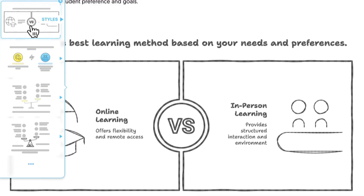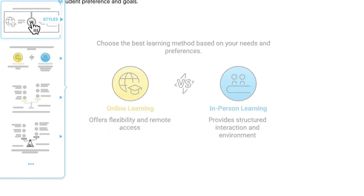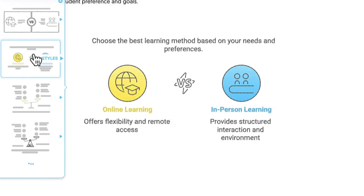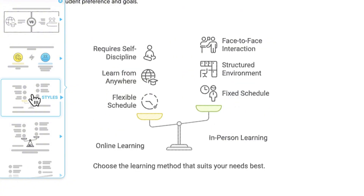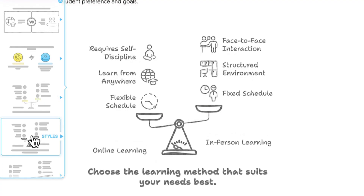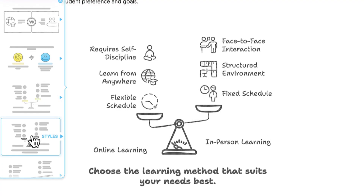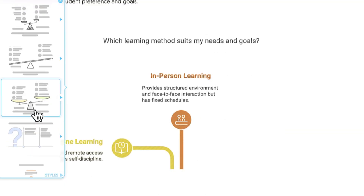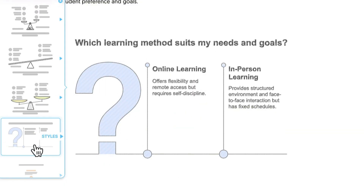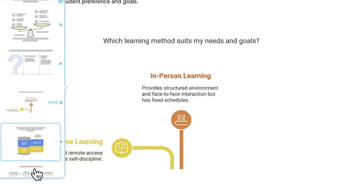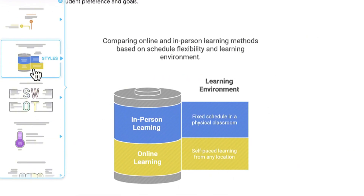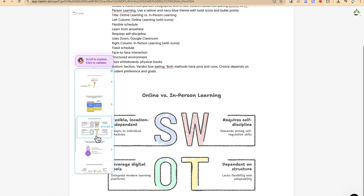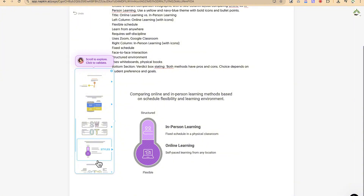You'll also see the different types of visuals it has created on the left-hand side. This one is more colorful, showing online learning and in-person learning differences with various styles. You can see many more generated variations — this one, or this one, or this one — depending on what you are trying to create. Most of these are editable, which is the best part.